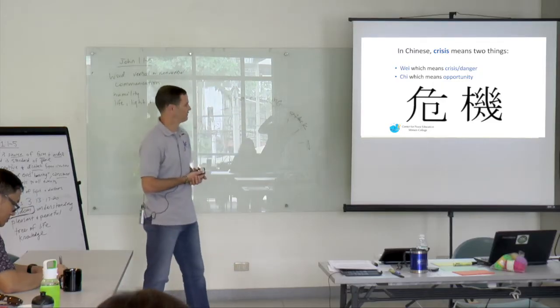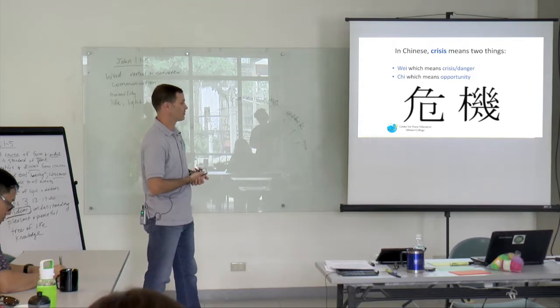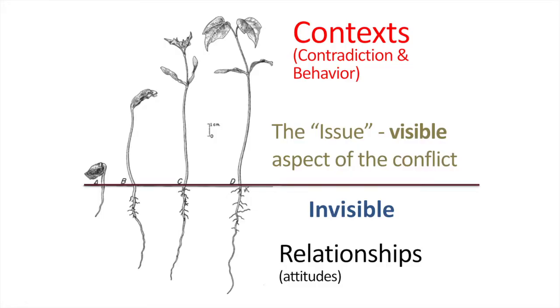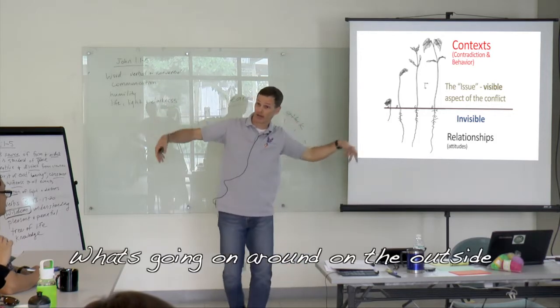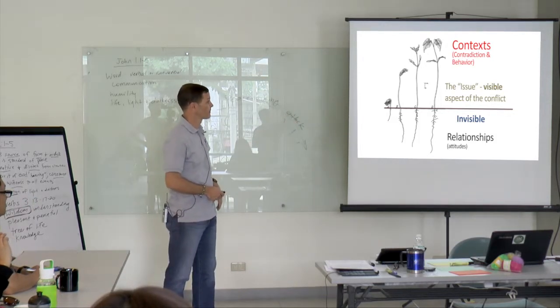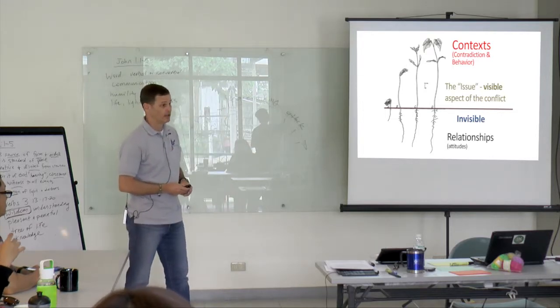So conflict transformation says it's not just the issue that confronts you - the visible aspect. There's also invisible aspect. There's also the context - so what's going on around on the outside that affects the conflict, the contradiction, the behavior.